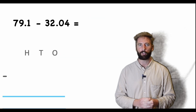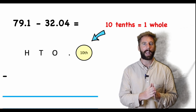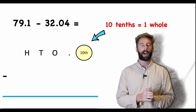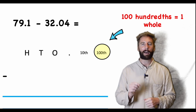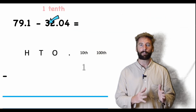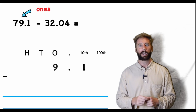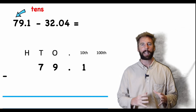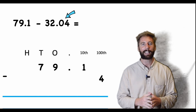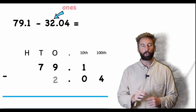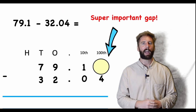Let's put our numbers into our place value chart. I still need ones and tens, but now I also need a decimal point, tenths, and hundredths. Tenths are the next column across — I need ten of those to get to one. Hundredths — I need a hundred parts to get to one. So for 79.1: one tenth, nine ones, seven tens. For 32.04: four hundredths, zero tenths, two ones, three tens.